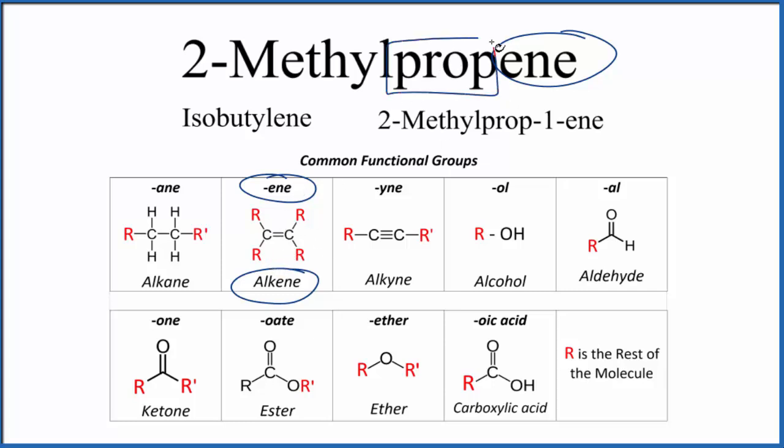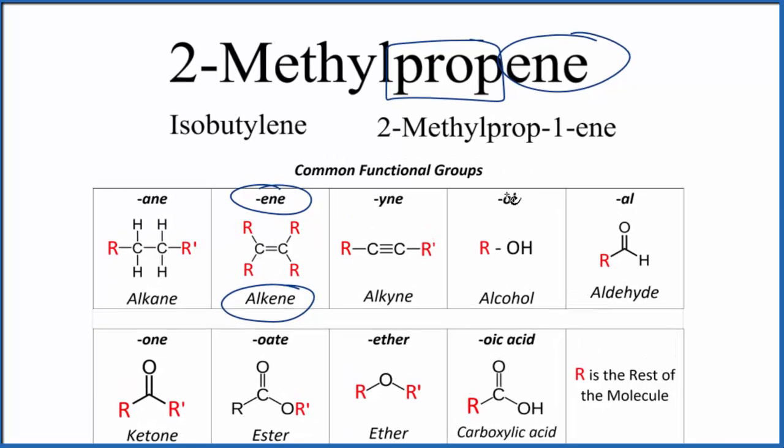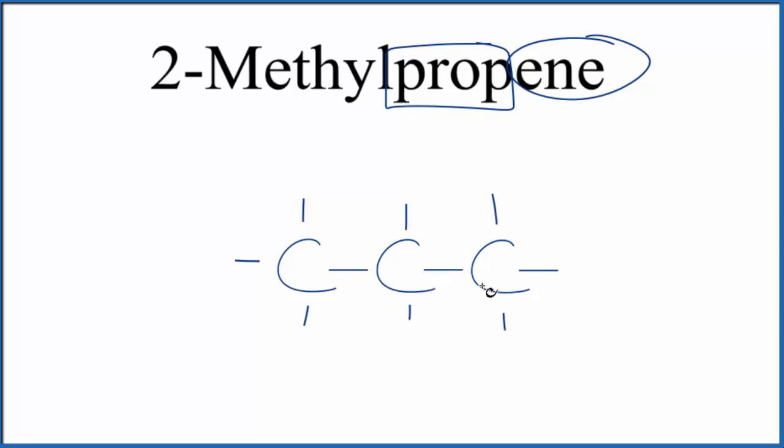Prop, when you see prop, that means three. So we're going to have three carbon atoms. There's going to be a double bond. Let's put a chain of three carbon atoms up there with a double bond.